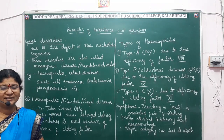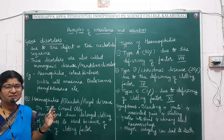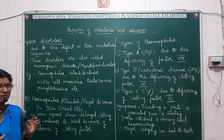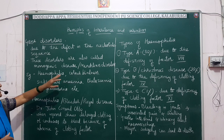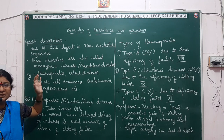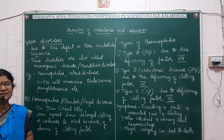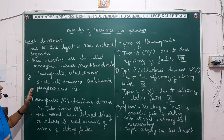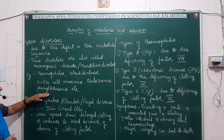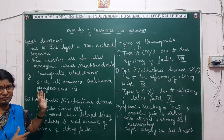Hello children, yesterday we dealt with chromosomal disorders and today we will deal with gene disorders. In gene disorders, the defect lies in the nucleotide sequence. Gene disorders are also called Mendelian disorders or monogenic disorders because they are due to the defect in a single gene and the inheritance pattern follows the Mendelian pattern. Examples include hemophilia, color blindness, sickle cell anemia, thalassemia, and phenylketonuria.